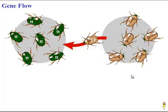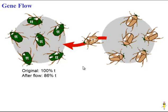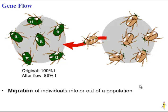Similarly, gene flow is also not necessarily adaptive. This occurs when an individual moves from one population into another, changing allele frequency. For example, a population that was originally 100% recessive T becomes 86% recessive T because the migrating individual brought dominant alleles into the population. Gene flow is simply migration — individuals moving in or out — and whether it is beneficial depends on who is moving and what the environment is like.